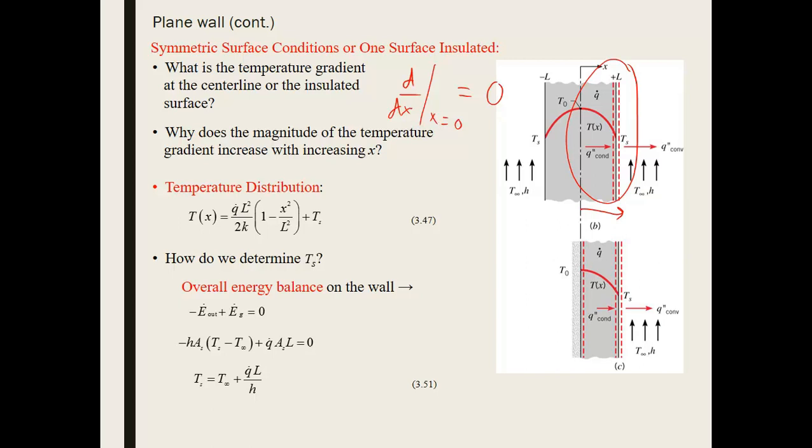The temperature distribution in this particular case ends up looking like this, and notice that this is no longer a generic solution. The constants c1 and c2 have been solved for by applying those different boundary conditions that I just described.